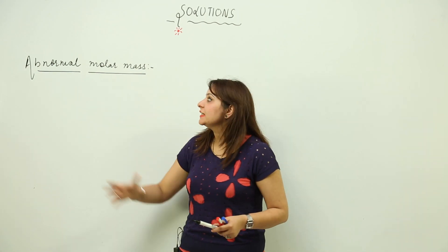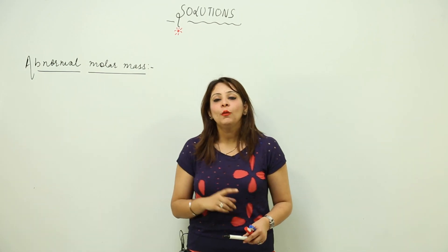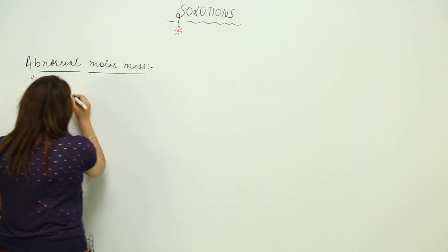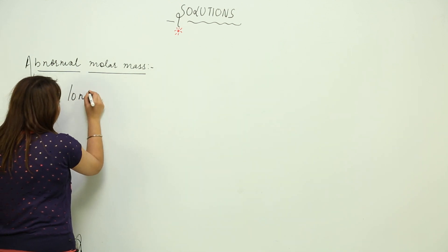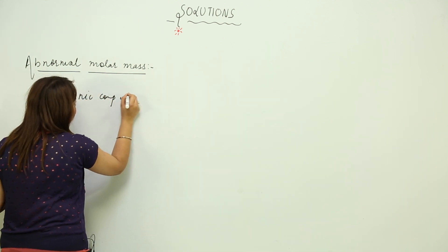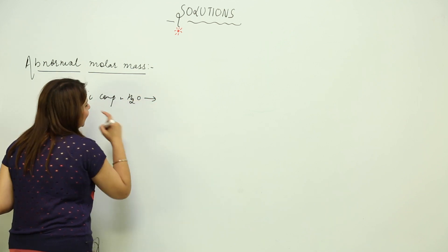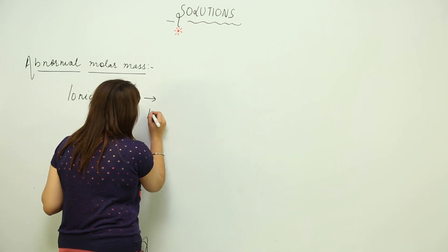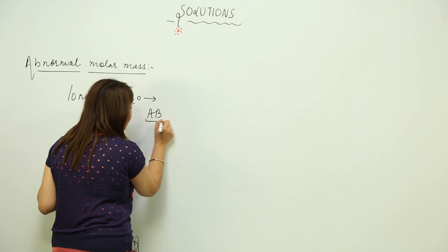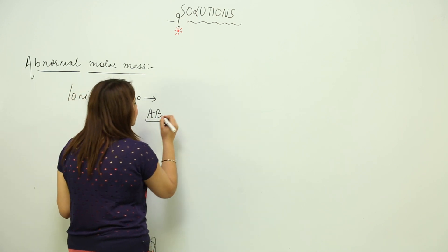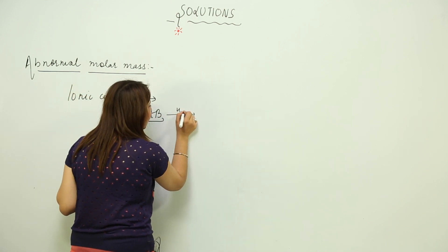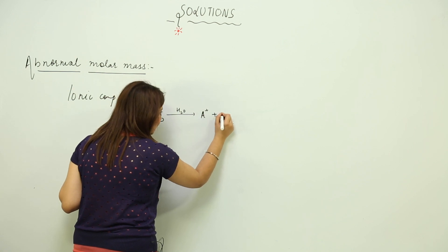Now we have the topic that is the abnormal molar mass. What happens when some ionic compound is dissolved in water? We get to see that either it breaks. Sometimes suppose I take an example AB as my ionic compound.